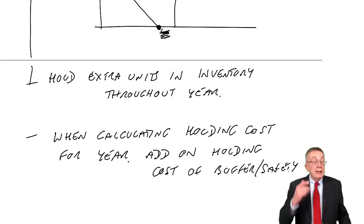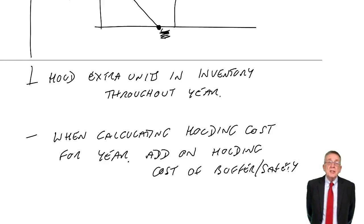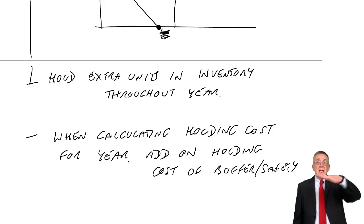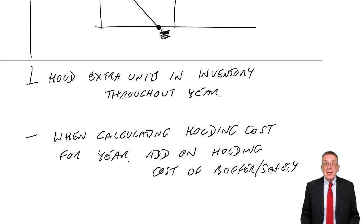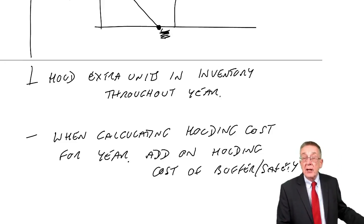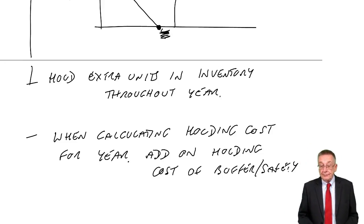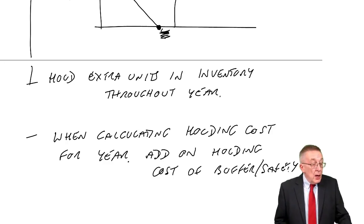So if I told you they were having safety inventory of 100 units, it's as though there's an extra 100 all year. We'd simply add on 100 units at whatever the holding cost per unit was. OK, that's that.